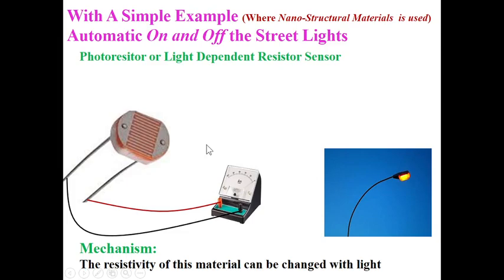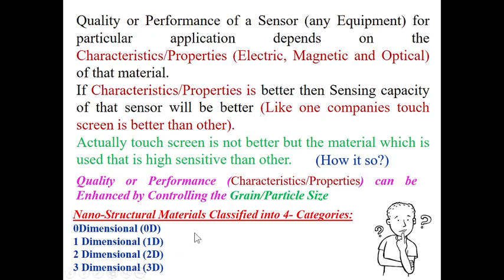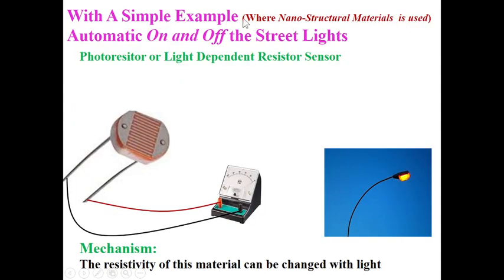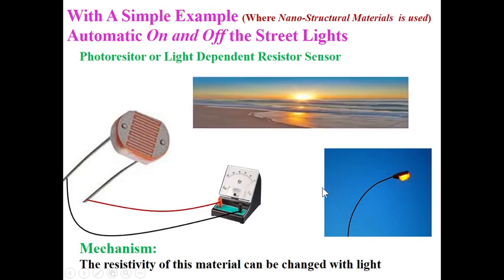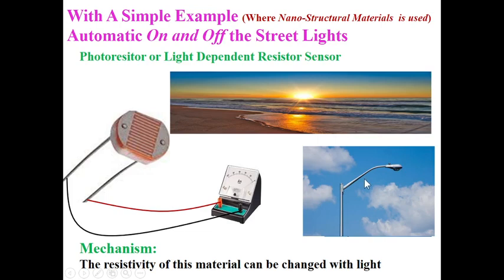Before moving to 0D, 1D, 2D, and 3D nanostructural materials, here is a simple example of where nanostructural material is used: the automatic on and off of street lights. In the night the light is on, and when the sun rises it automatically turns off. This happens due to the use of a photo resistor or light dependent resistor, also called an LDR sensor. Its resistance changes with light.